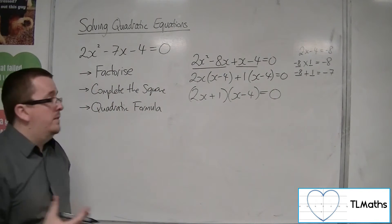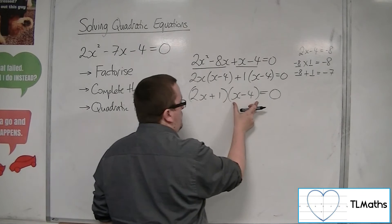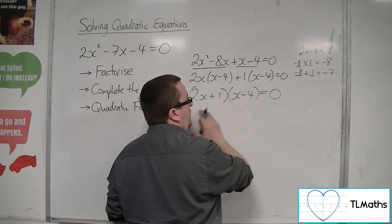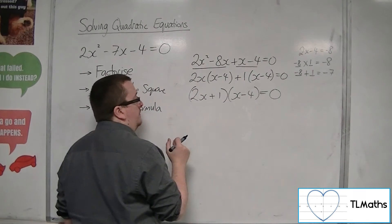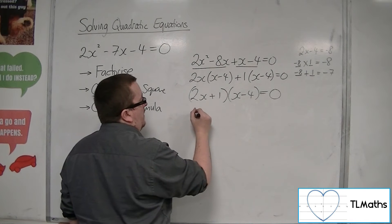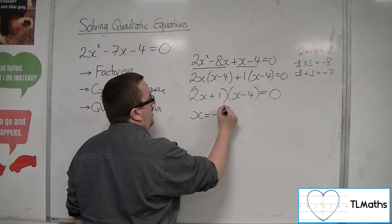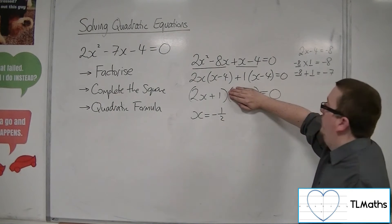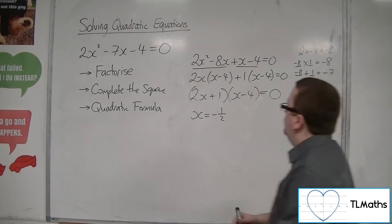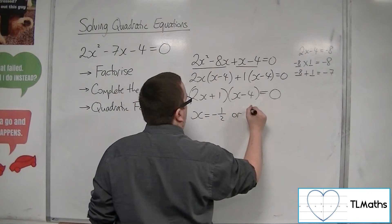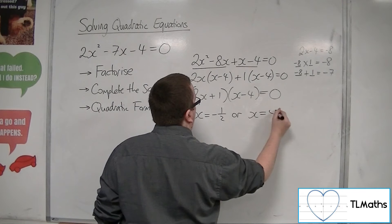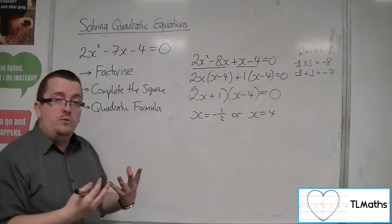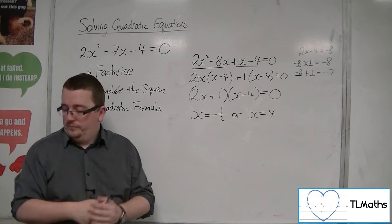So either this bracket is 0 or that bracket is 0, because then we've got 0 times something or something times 0 to make that 0. So if that bracket is 0, that means that x would have to be minus 1 half. You can think of it as adding 1 to both sides and then dividing both sides by 2. Or x equals 4 in order for that bracket to be 0. So there are two solutions, and we can do that using factorising.